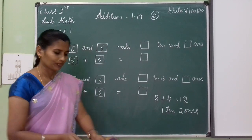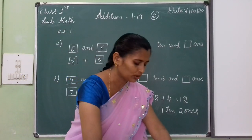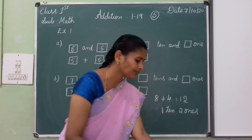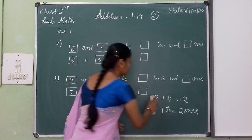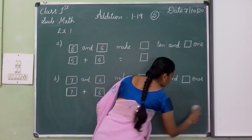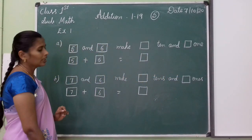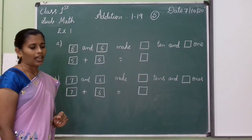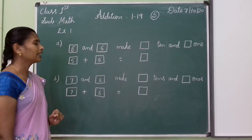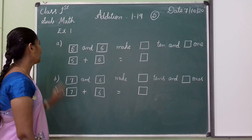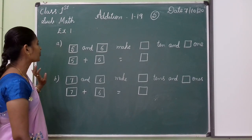Now look at double digit. Add by making 10. Exercise 1.